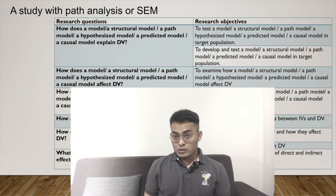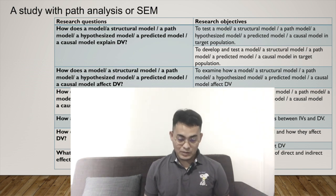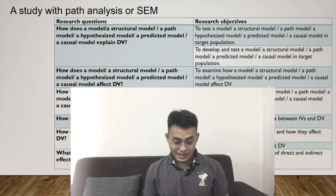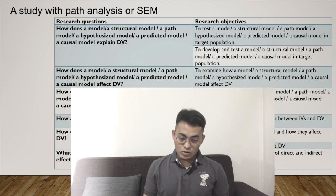Now a study with path analysis or structural equation model. This covers only general objectives. If you want more specific objectives, you can write more. But this is for one general objective or one general question. The first question: how does a model — a structure model, path model, hypothesized model, predictive model, or causal model — explain dependent variable? It depends on your research design which term you use.